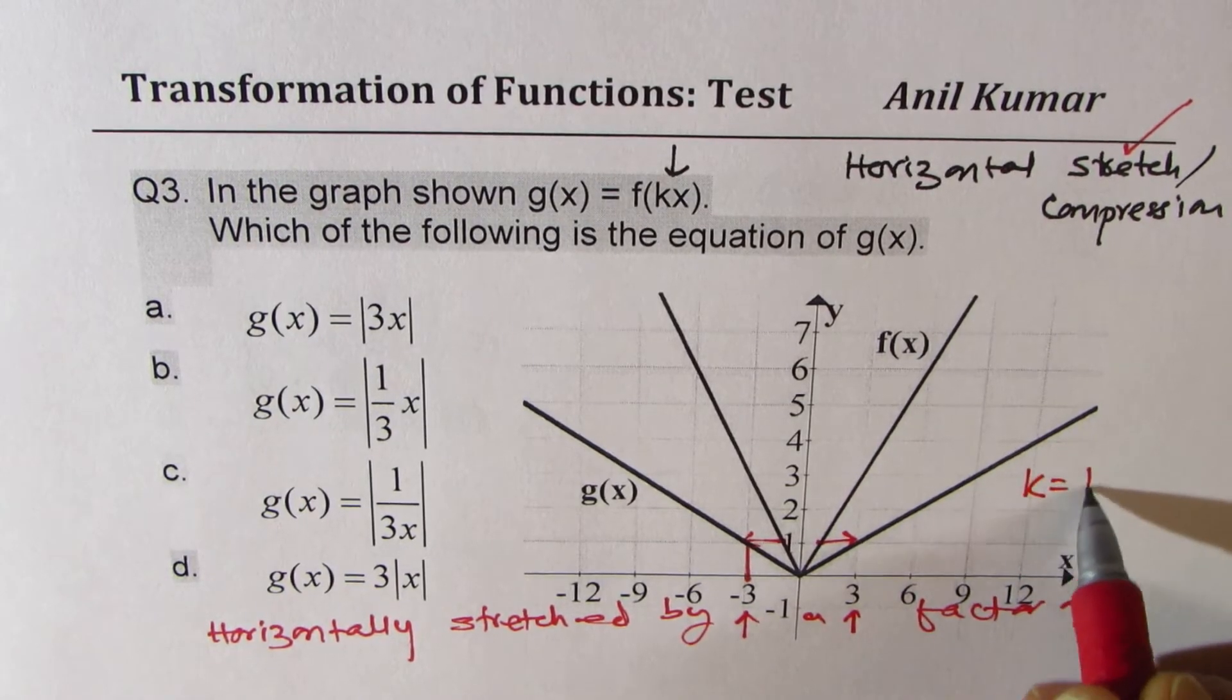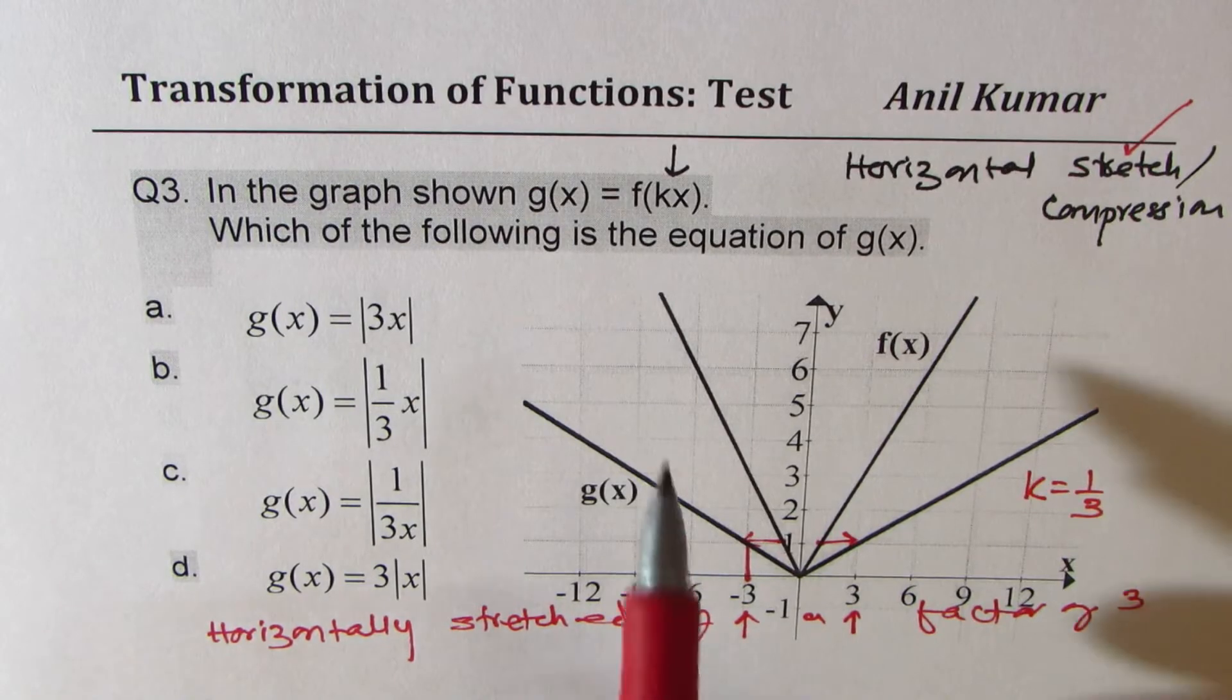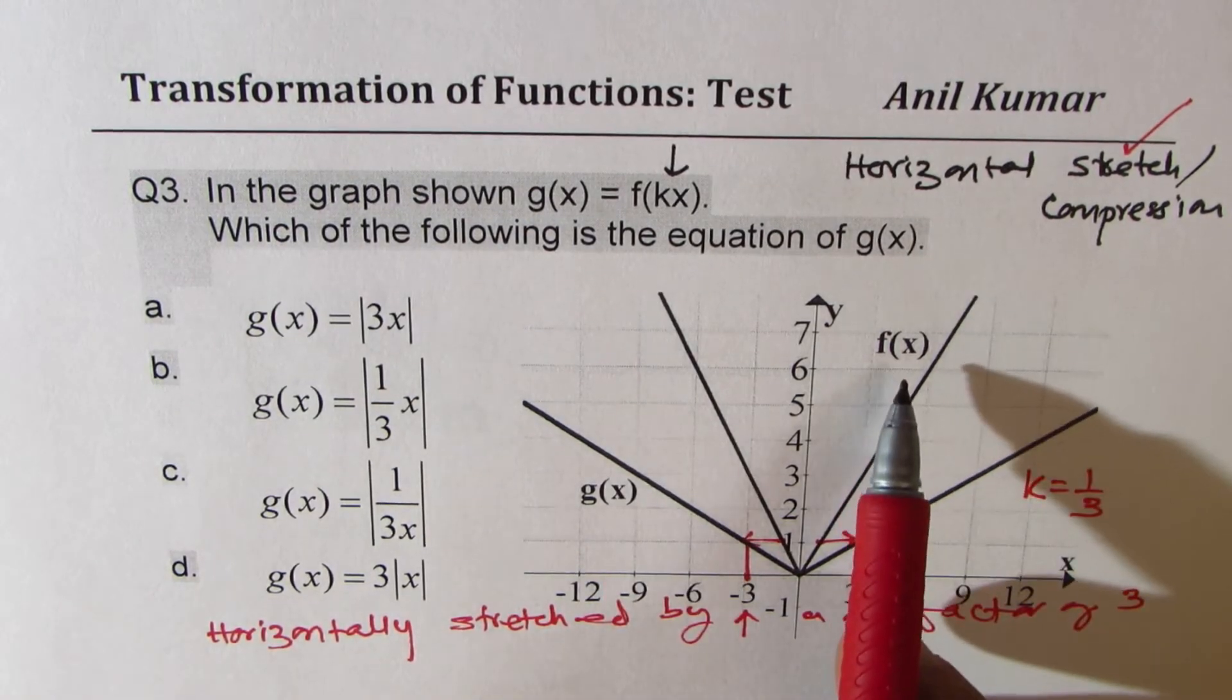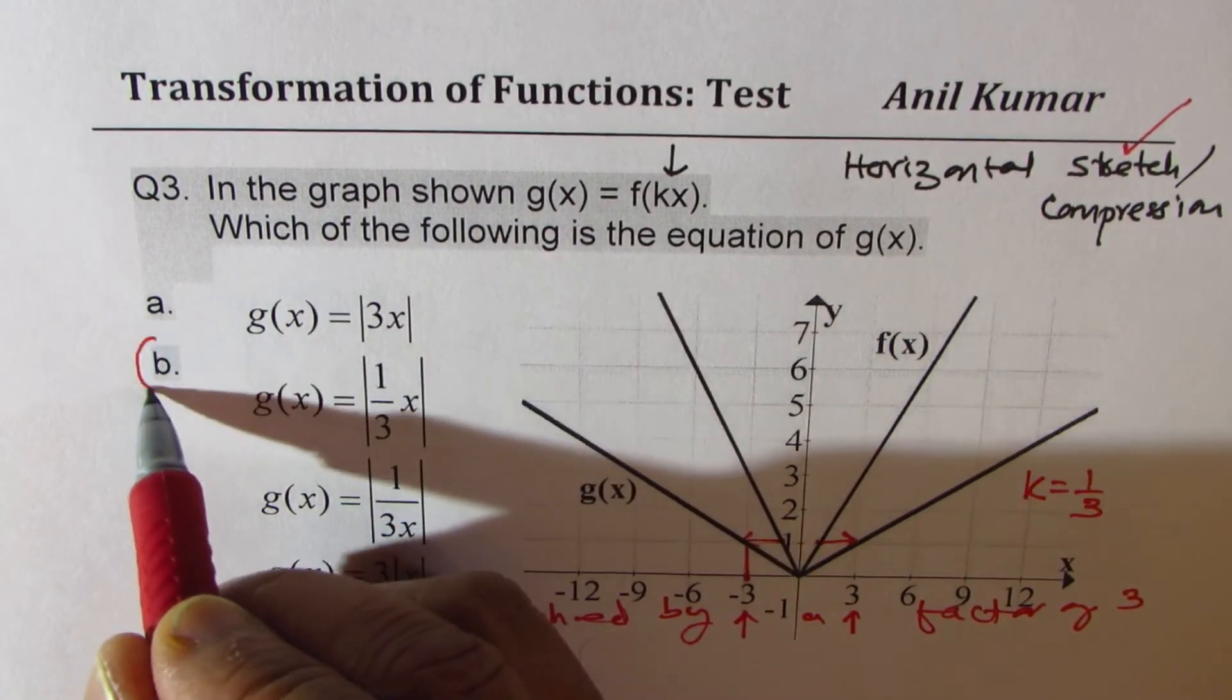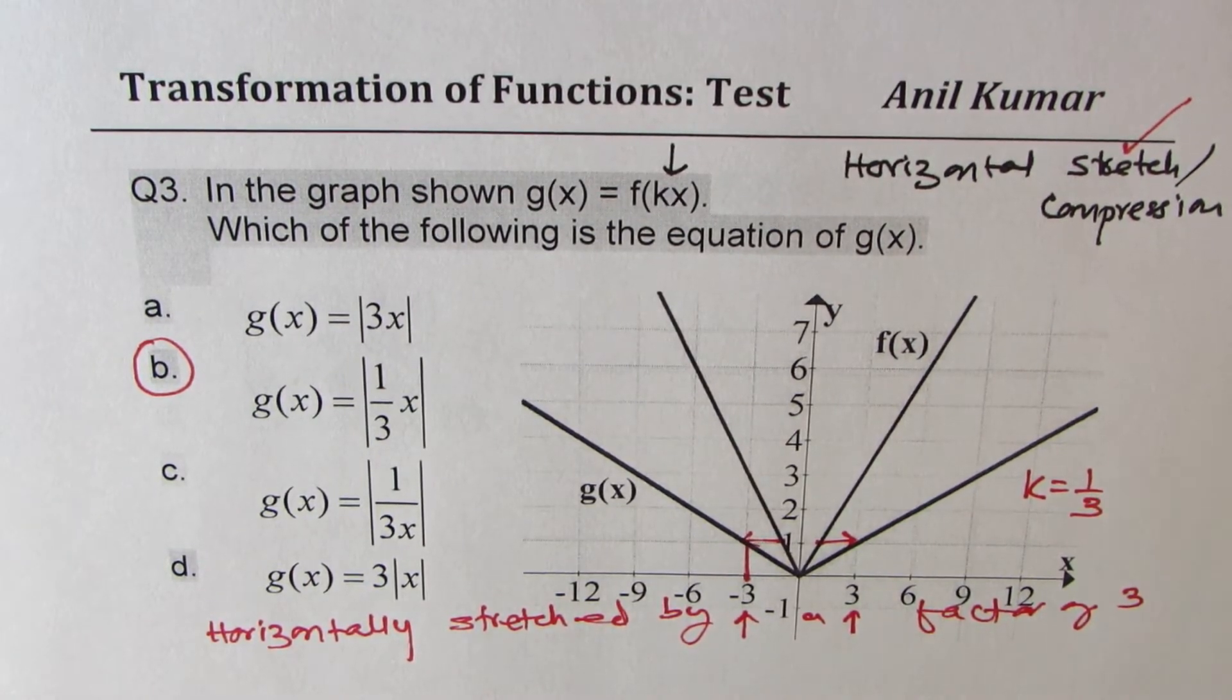So the function is horizontally stretched by a factor of 3. And therefore, what should be k equals to? K should be equal to 1 over 3. That is important to understand. So the function is 1 over 3x. So that is the right option. b is the right option. That is how you're going to answer this question. I hope the concept is clear.